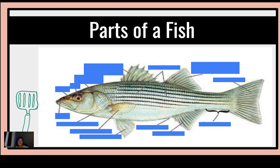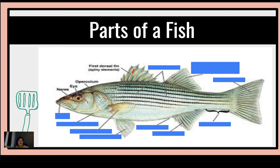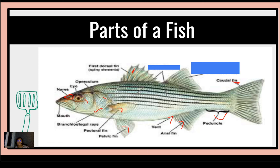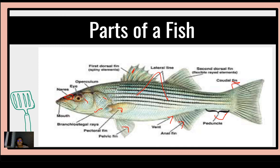Let's take a look at the parts of the fish. First, we have the first dorsal fin — this is the spiny portion on top. We have the upper column, the eye, and the nares, which is the nostril of the fish. We also have the mouth, the branchiostegal rays, the pectoral fin, the pelvic fin, the vent, the anal fin, the peduncle, and the caudal fin on the last part. These are the lateral lines that we can see on both sides, and the second dorsal fin, which has flexible ray replacements. These are the parts of the fish.